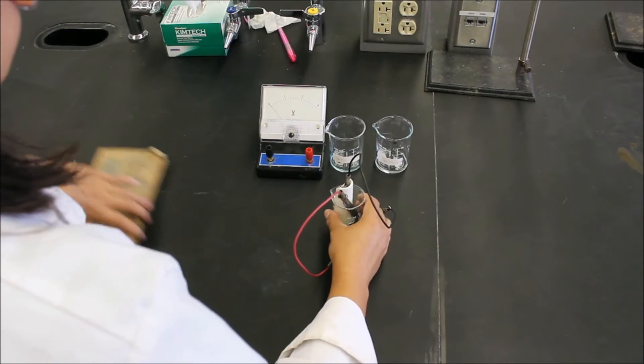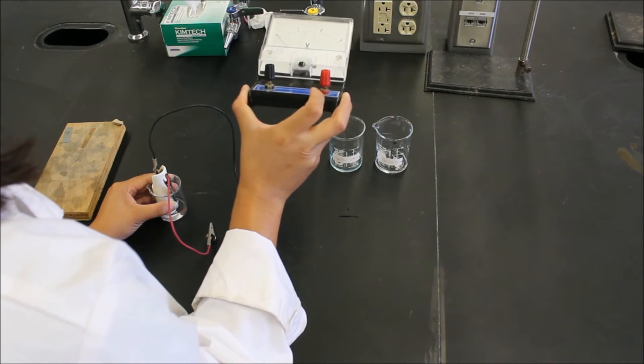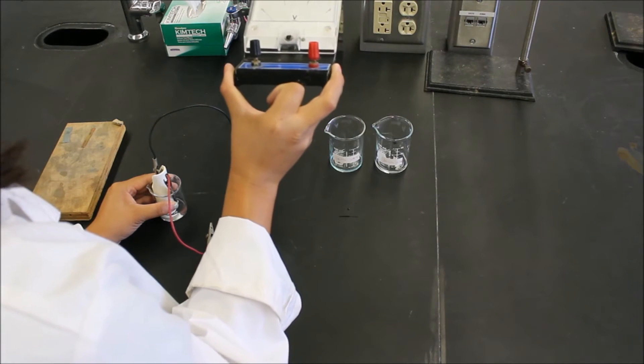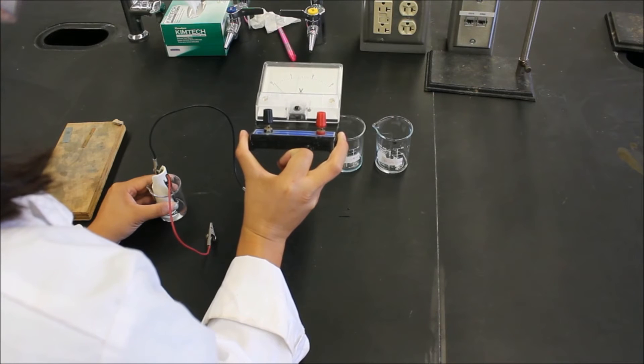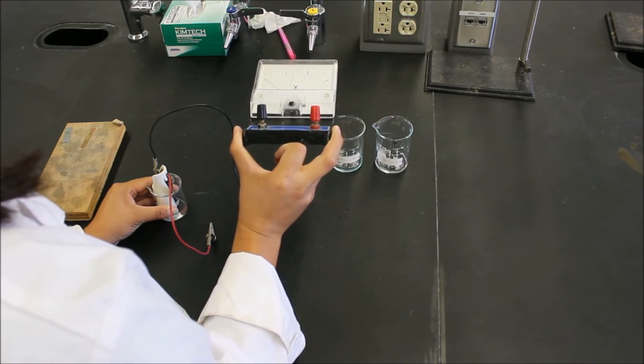After we have that, we want to connect these to the voltmeter. Now you'll notice that there's a plastic part of the post and the metal part of the post. From 101, if you remember correctly, plastic is not a very good conductor. So we want to make sure it's connected to the metal part of the post.